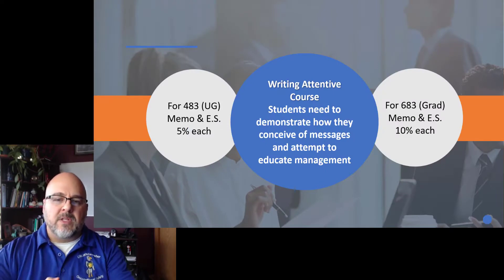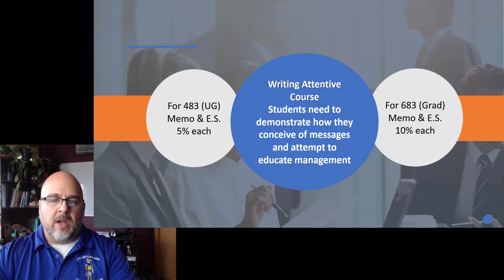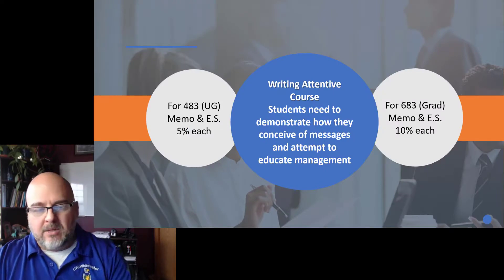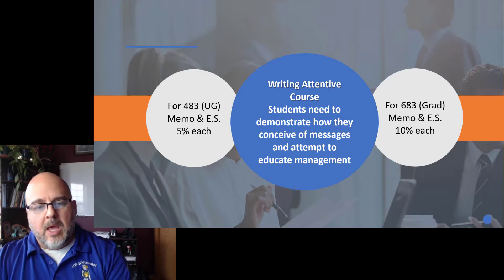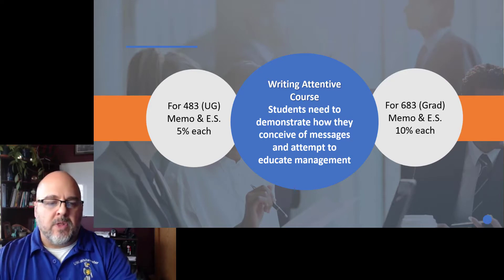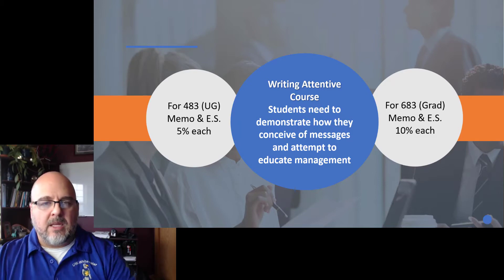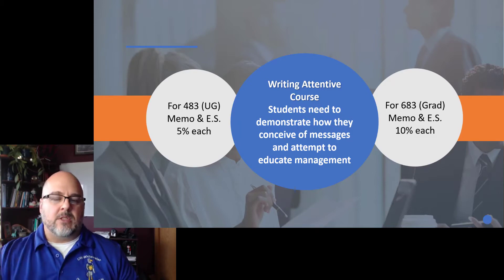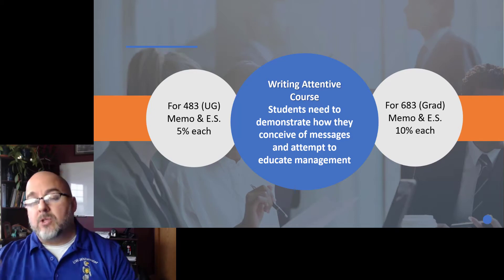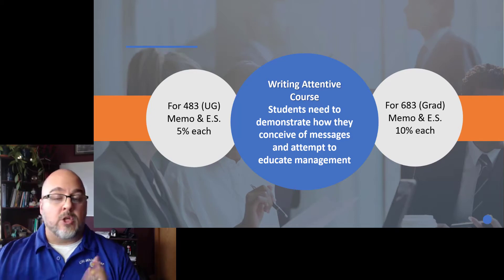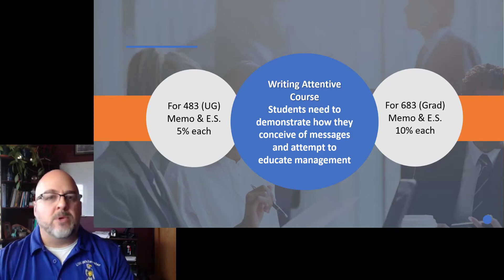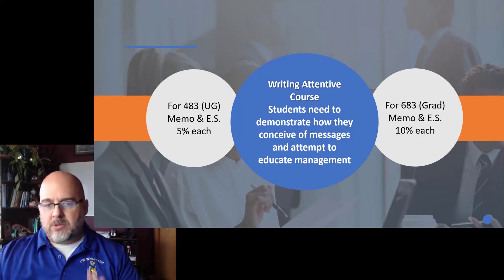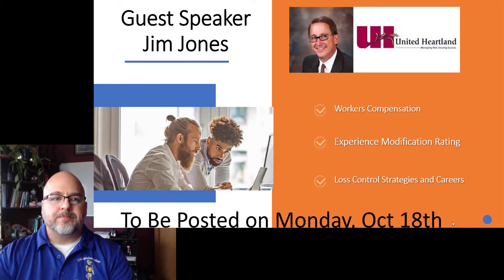Quick reminder: this is a writing attentive course — I talked about that at the very beginning. For the 43 undergrad students, the memo and the executive summary are each 5%, so combined they're 10% of your grade. For grad students they're 10% each, so 20% of your grade. Just reminding you of the breakdown.